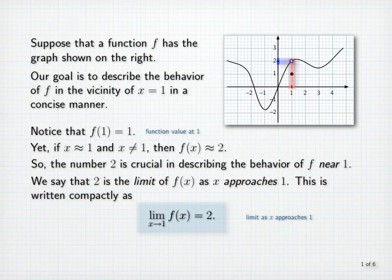Also, we point out that the limit as x approaches 1 has nothing to do with the value of f at 1. We could change f of 1 to any number we like, or even leave it undefined, and the limit remains 2. Note that if the limit as x approaches 1 is different from f of 1, there's a hole in the graph at the point 1 comma 2.